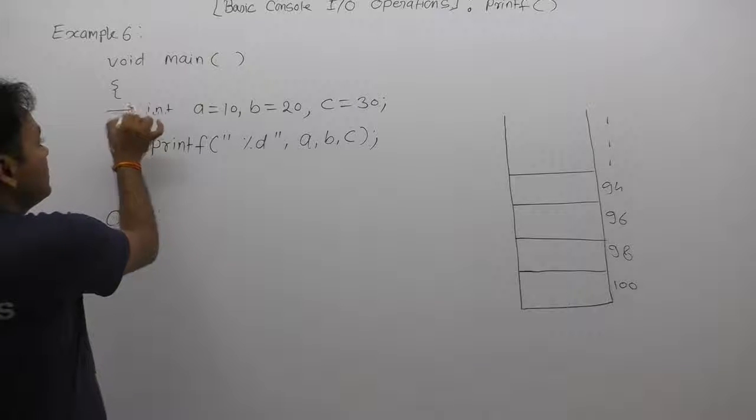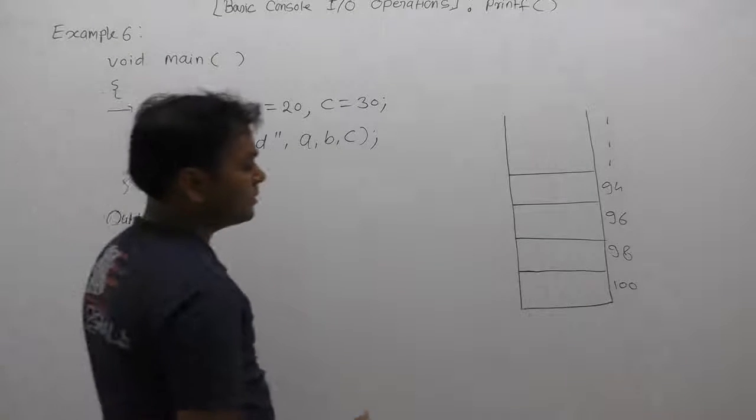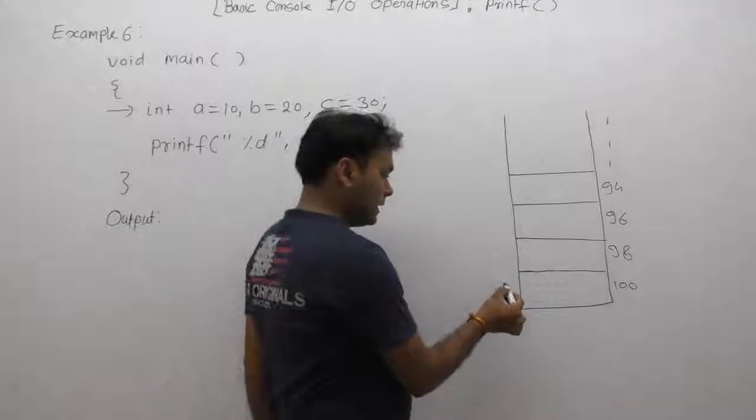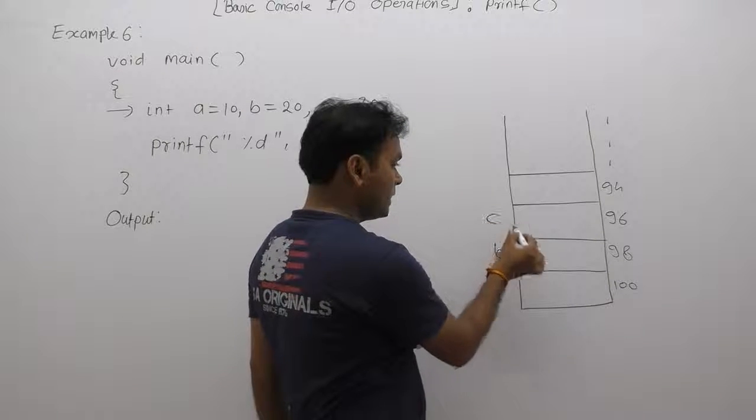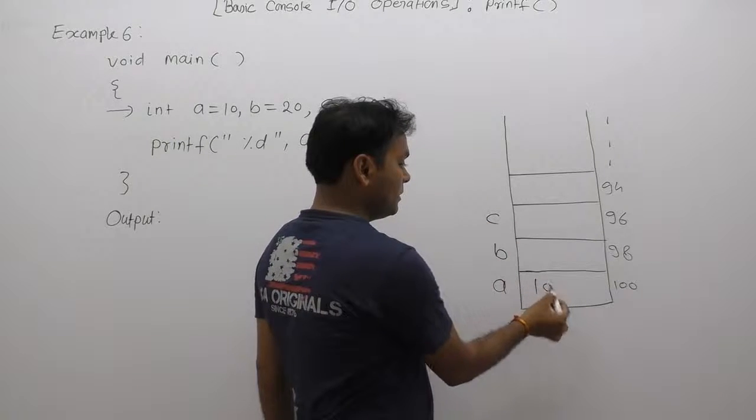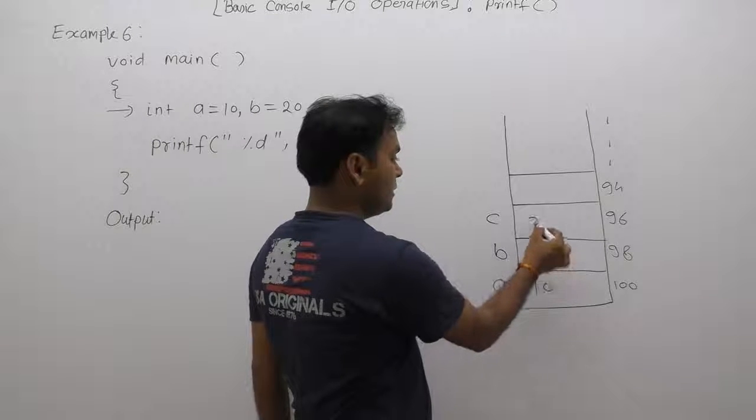First of all, we are declaring three variables: variable A, variable B, variable C, with given values 10, 20, 30.